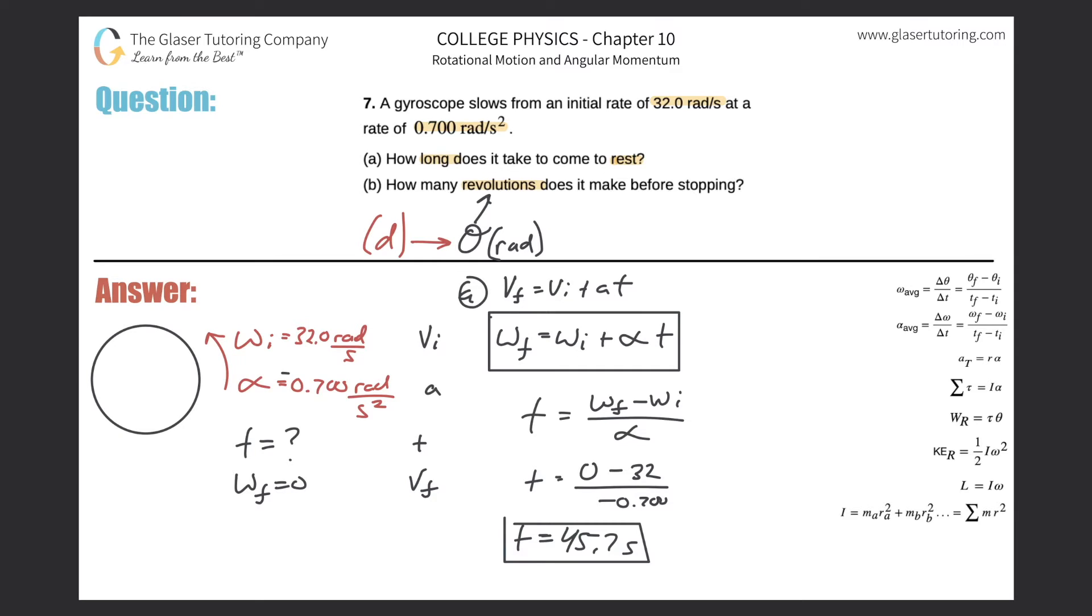Now for letter B, we're asked to find the distance and we're given a bunch of information. I'm sure there's more than one way to calculate this. What I would like to do is I would like to try to use information that's given in the problem, not something I calculated.